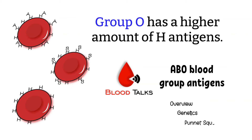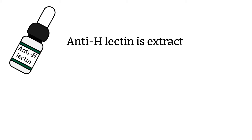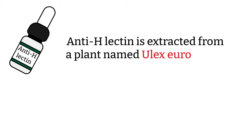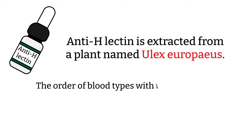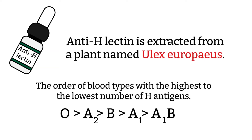Let's get back to the H antigen. We can test the amount of H antigen on the RBC by using Anti-H lectin. The Anti-H lectin comes from a plant extract. Here is the highest to the lowest amount of H antigen on RBC.